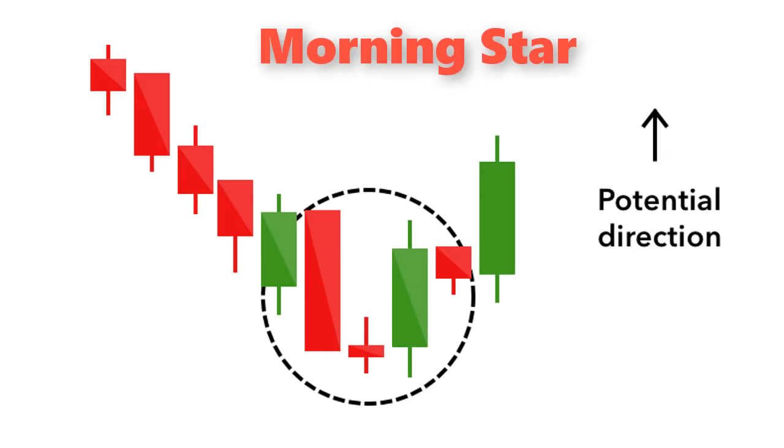Morning star. The morning star candlestick pattern is considered a sign of hope in a bleak market downtrend. It is a three-stick pattern, one short-bodied candle between a long red and a long green. Traditionally, the star will have no overlap with the longer bodies, as the market gaps both on open and close. It signals that the selling pressure of the first day is subsiding, and a bull market is on the horizon.